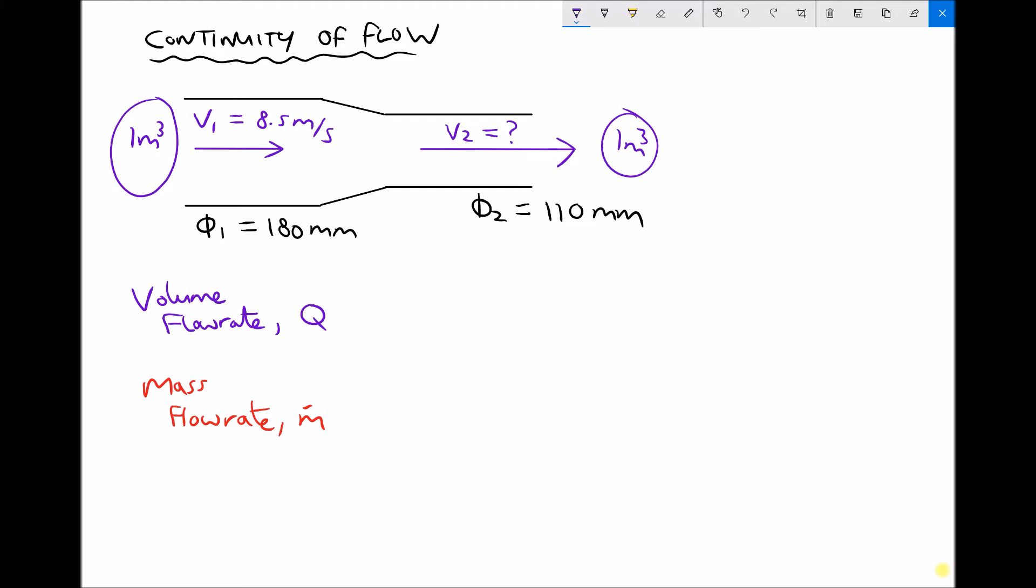So if we would have 1 m³ of fluid flowing into that duct every second then we would also expect 1 m³ of fluid to flow out of that duct every second. Now what we're referring to there is something called the volume flow rate because it's the amount of volume flowing into or out of a system every second. And our units for that are meters cubed per second. And the letter that we use to denote volume flow rate is Q.